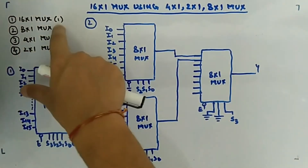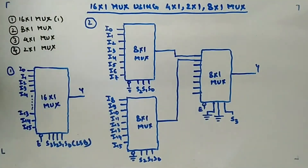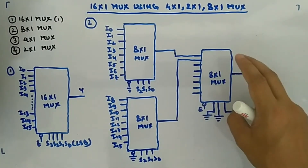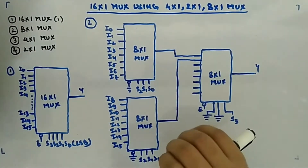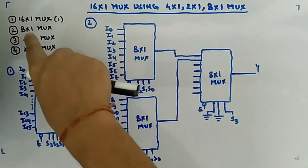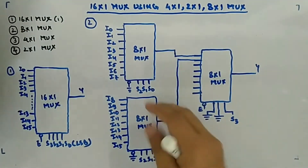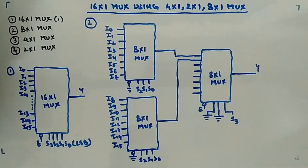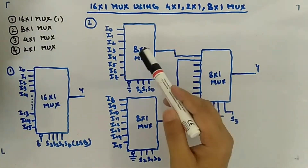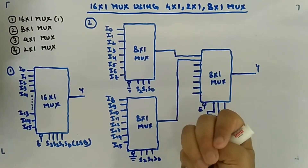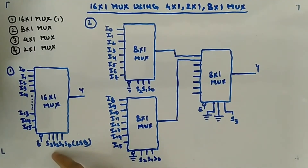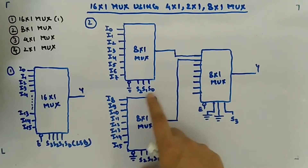The second method uses 8:1 MUXes - a total of three 8:1 MUXes will be needed. You have 8, but want 16, so two of them in the first level: first will handle I0 to I7, and second will handle I8 to I15. Since it is 8:1, three select lines will be there - two to the power three - so from LSB you start collecting three select lines: S0, S1, S2 going to both MUXes.